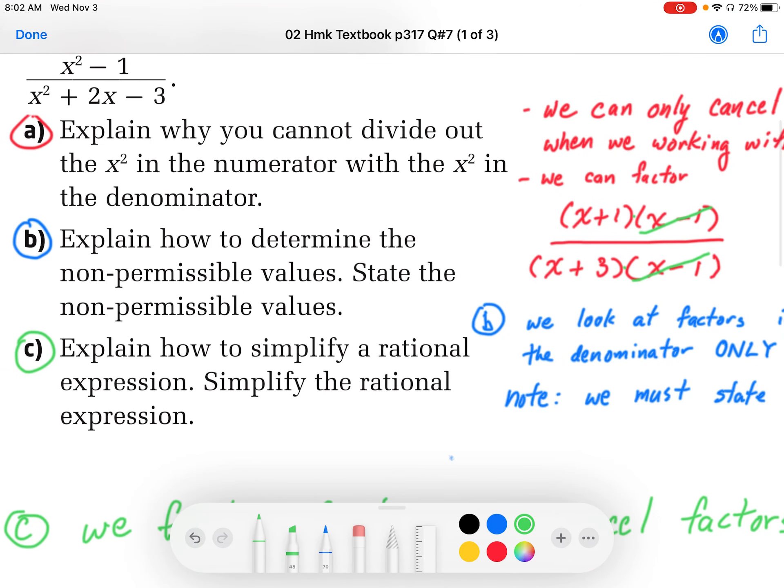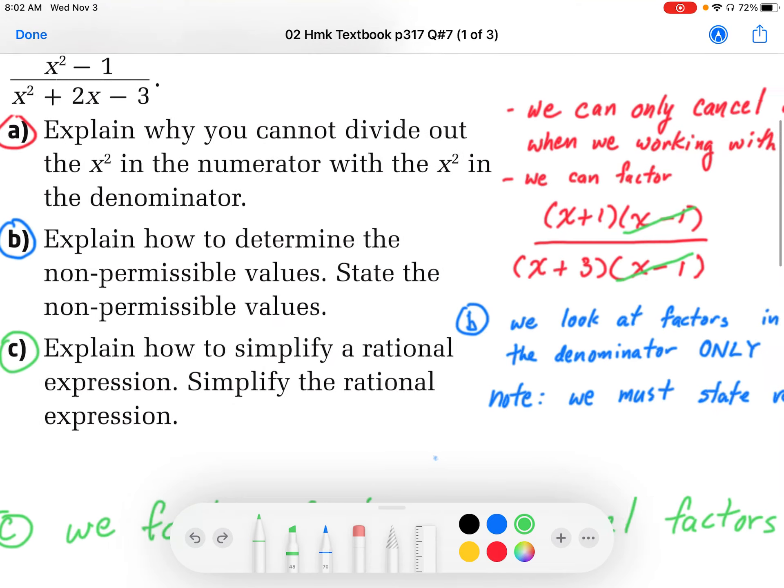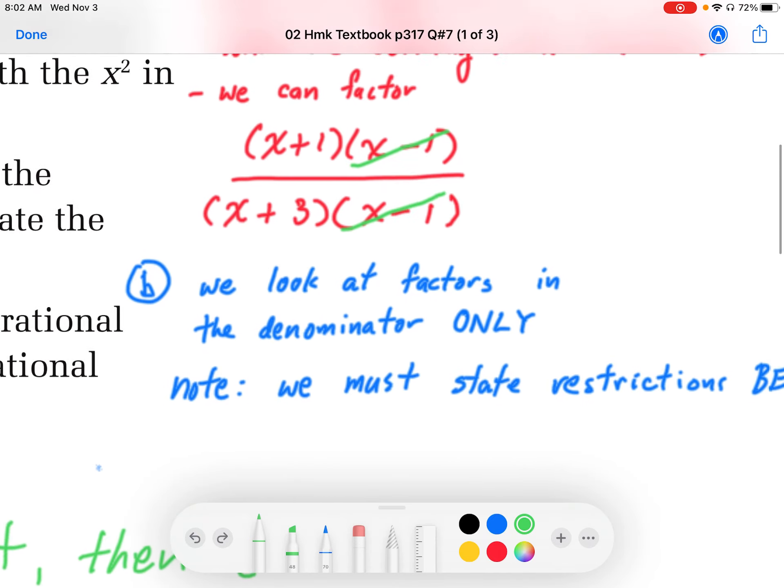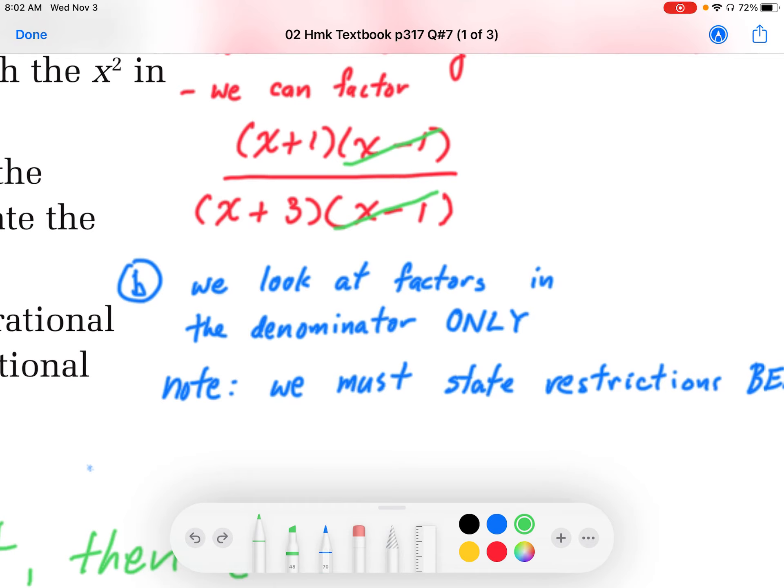For part B, the question asks, explain how to determine non-permissible values and state the non-permissible values. So when we talk about non-permissible values, we're talking about just the denominators. So we only look at the denominators.